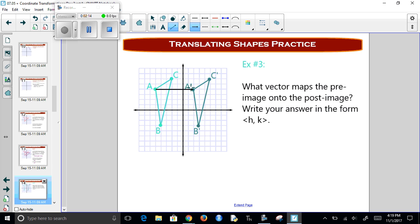So what goes from here to here? Well, it looks like we're just going to the right 7. So this vector would be <7, 0>. And we don't go up or down, so that would be 0.